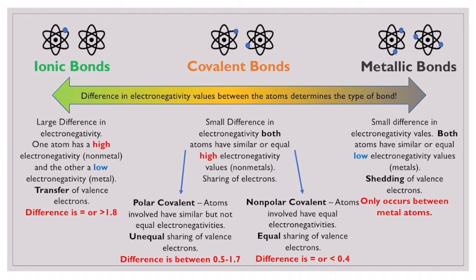Ionic bonds occur between atoms that have a really large difference in their electronegativity values. So one atom is going to have a really high electronegativity, like a non-metal, and the other atom is going to have a really low electronegativity, so it's going to be a metal. In this case, we have a transfer of valence electrons occurring — that more electronegative atom is pulling those valence electrons in towards itself and taking them from the atom with lower electronegativity.